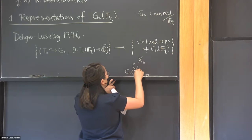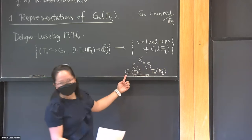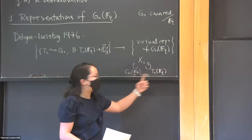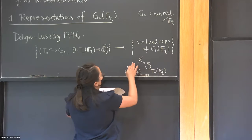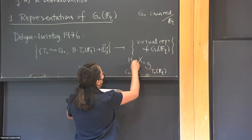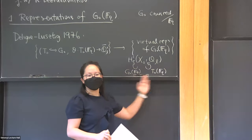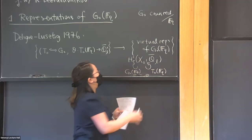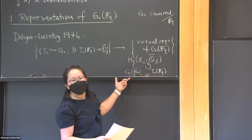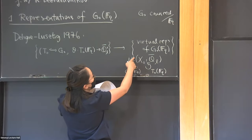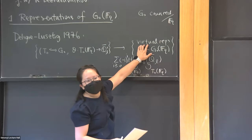T_0 is not central inside G_0, so the two actions don't come from restricting one to the other. It's important that they commute, because if I take cohomology of X, each cohomology group also has an action of the product G_0(F_q) × T_0(F_q). This gives a Q̄_ℓ vector space, and therefore a representation of this product. I'm not going to care about which degree things occur in, so I just take the alternating sum — that's why I only a priori get a virtual representation.